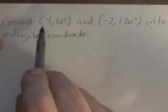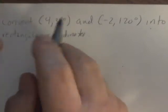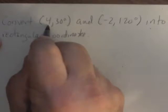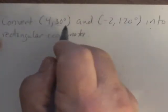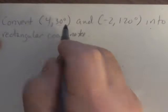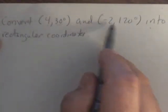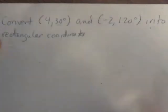When you're given a polar coordinate, it consists of R, which is your hypotenuse in a right triangle, and your angle. For example, (4, 30°) has R equals 4 and angle equals 30 degrees. The other example is R equals negative 2 and angle equals 120 degrees.